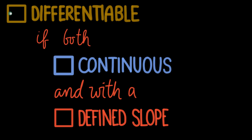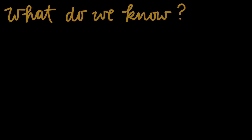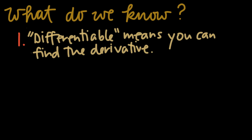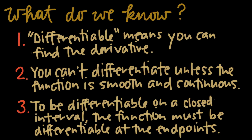To summarize, a curve is differentiable when it is continuous with a defined slope at every point. A curve without discontinuities, cusps, or vertical tangents is differentiable, which means we can find its first derivative. If a curve is differentiable, it can be differentiated. Only functions that are smooth and continuous are differentiable, which means a function won't be differentiable at holes, jumps, asymptotes, or corners. In order to be differentiable on the closed interval, the curve has to be differentiable everywhere in the interval, including at both endpoints.